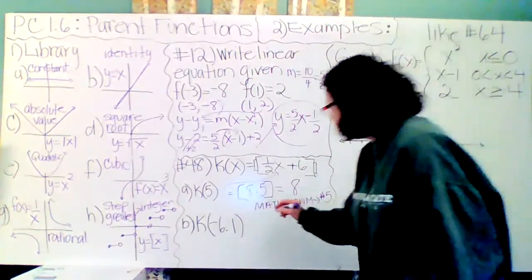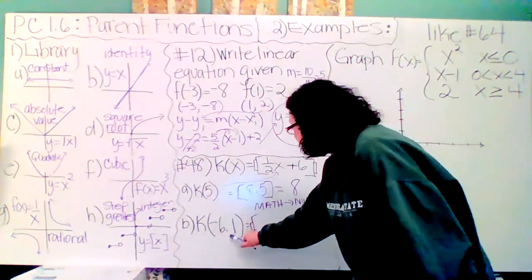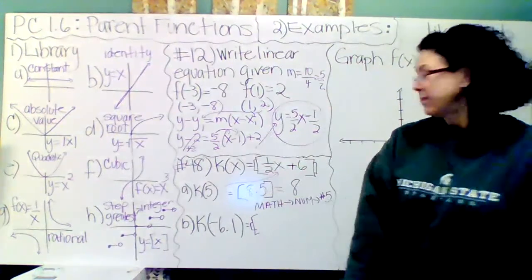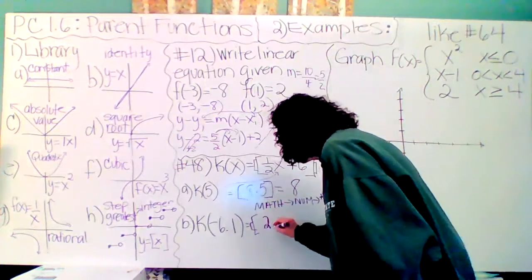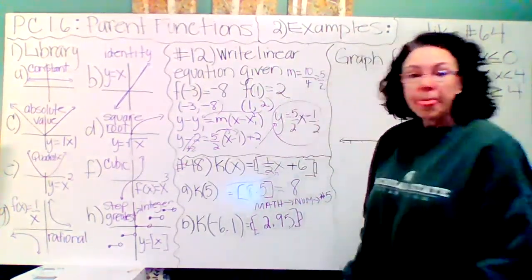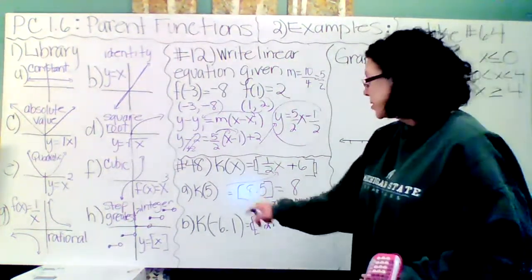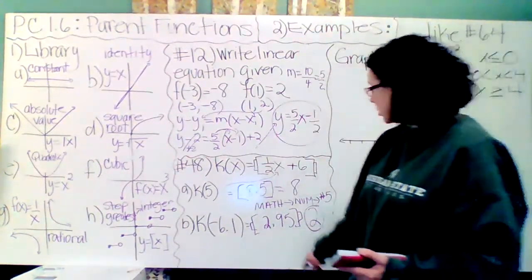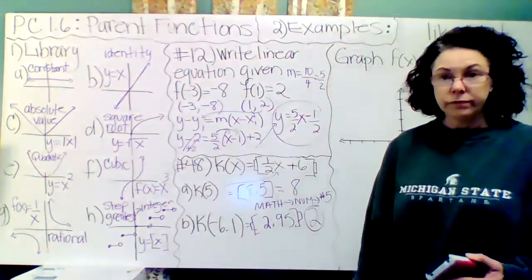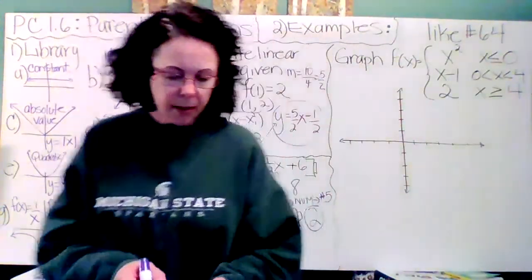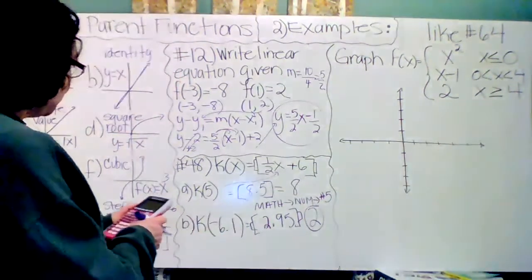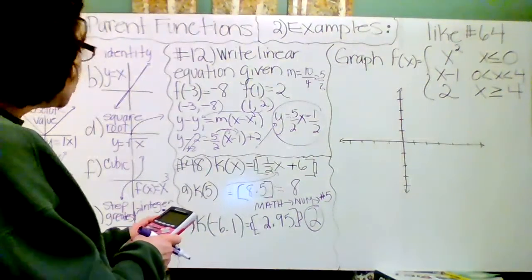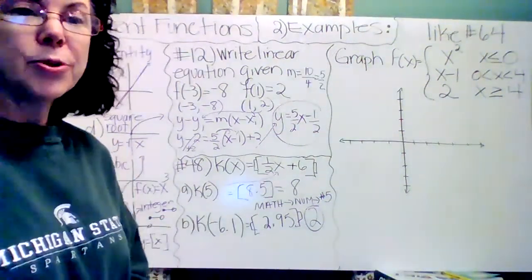What about if you put in a negative 6.1? Half of that is negative 3.05 plus six is 2.95. I know that this is super close to three. It does not matter how close it is to three. The greatest integer function will produce the greatest integer less than or equal to 2.95, which is a two. If you're really close to buying three items at Meijer but you're short money, they're going to make you buy two. Let's go ahead and put that in. Math, number, number five, I-N-T. Let's do a half times negative 6.1 and add a six to that. Sure enough, we get a two.